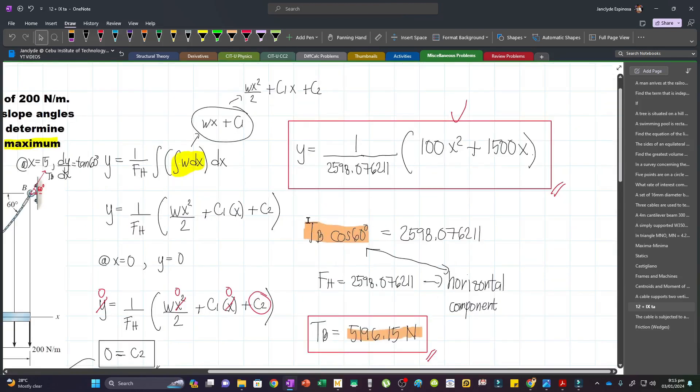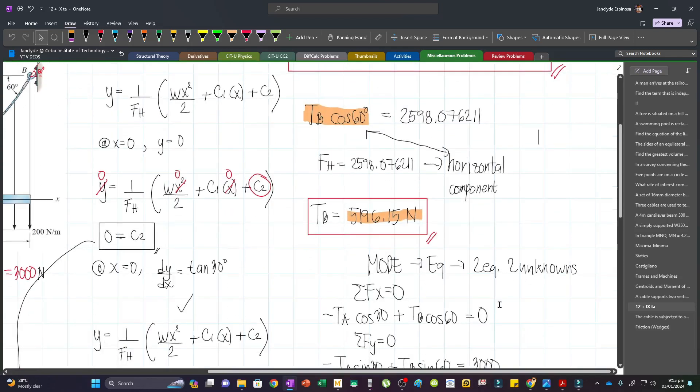Now how will we do that? Let's go back to this equation. We know that 2598.076211 is our FH. Now we initially have TB. So to get FH, or this value, we will just multiply TB by cosine 60.